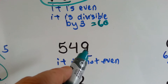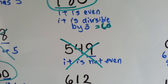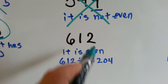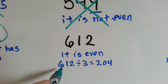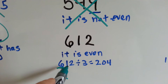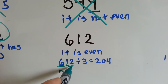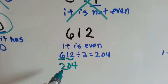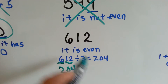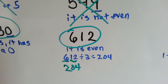How about 549? It's not an even number — it ends with a 9, so nope, not allowed. How about 612? It's an even number — it ends with a 2. Is it divisible by 3? How many 3s fit into 6? 2. How many 3s fit into 12? 4. So 204 plus 204 plus 204 gives you 612. Yes, it is divisible by 6 because it's even and you can divide it by 3.